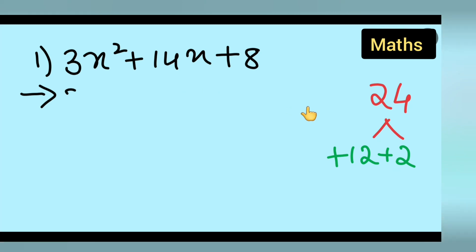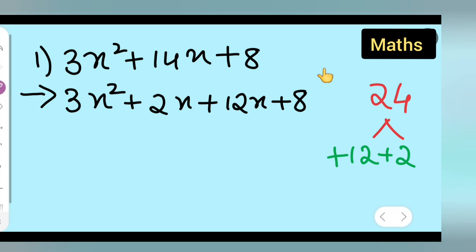So you can write down 3x square plus 2x plus 12x plus 8. Now you know that 2x plus 12x will give you 14x. Now what you are going to do is take from these two common and from these two.